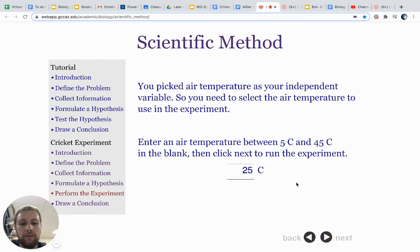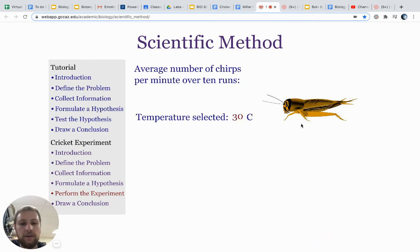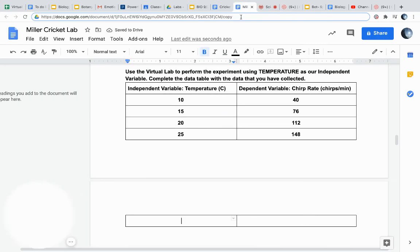Yes, we do want to repeat it one more time. 30 degrees Celsius. Even faster, 184 chirps per minute. 30 degrees, 184 chirps per minute.